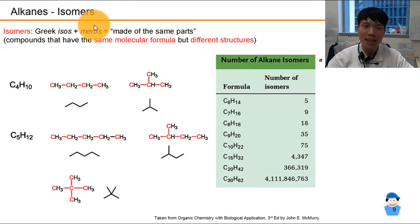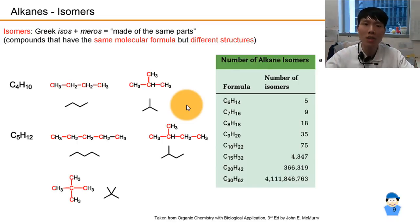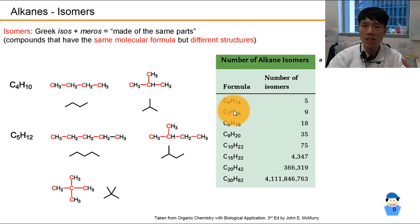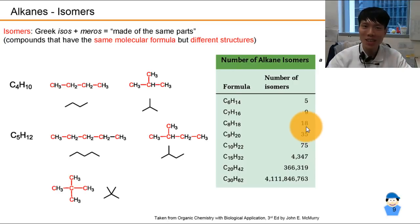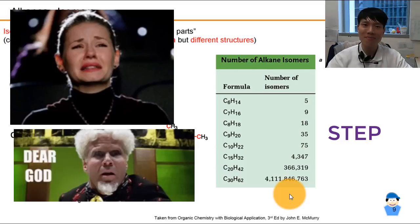The next term you have to know is isomer. Isos means same — it comes from the Greek word isos meros, which translates to made of the same parts. Isomers are defined as compounds that have the same molecular formula but different structures. For example, C4H10 can be drawn as the straight chain butane, or as 2-methylpropane. For C5H12, there are even more ways of drawing it. The number of alkane isomers increases as n increases, and there is no formula to account for that — you just have to try until you can't find another isomer.